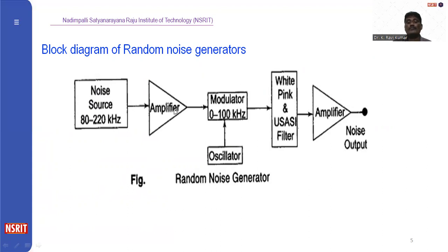The noise source output is applied to an amplifier, and then given to the modulator. The combination of the oscillator output and the amplified noise source output is heterodyned in the modulator, bringing the signal down to the 0 to 100 kilohertz range, and then given to the white, pink, and USASI filters.